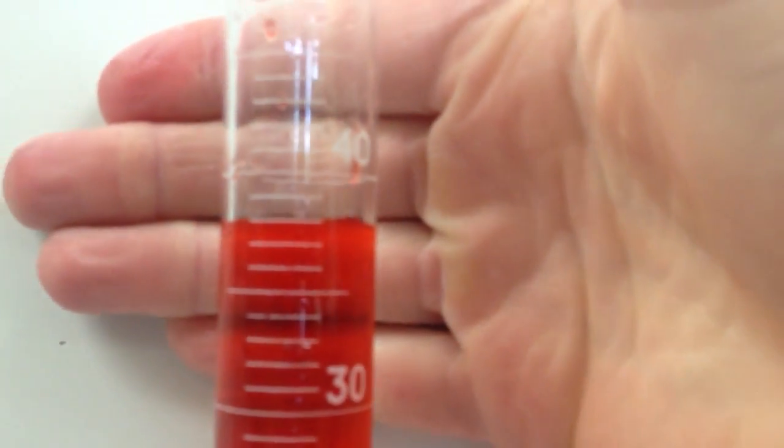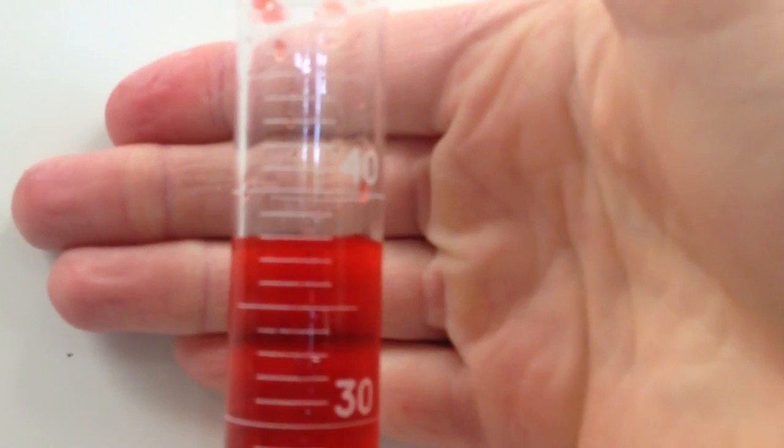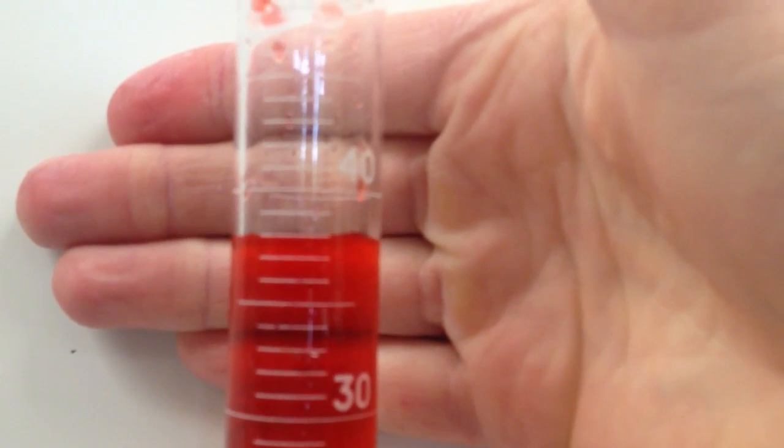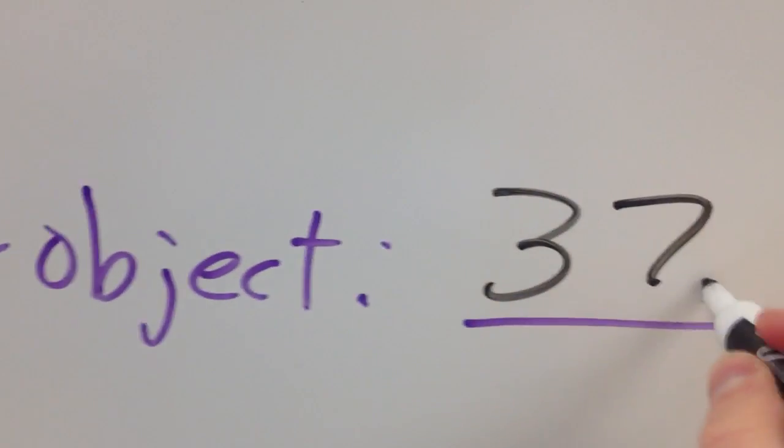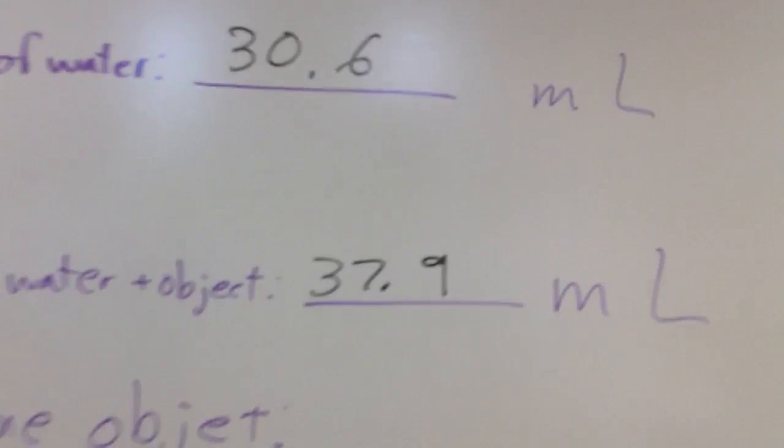Alright. Now I've got a new volume. This time my volume is 35, 36, 37. It's not quite to the 38. The line is a little bit lower than the 38. You can't really see it that well on the video here because I'm using an iPhone. So I'm going to say it's 37.9 milliliters.